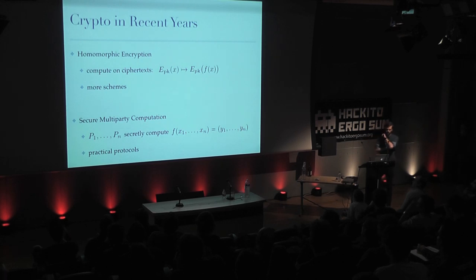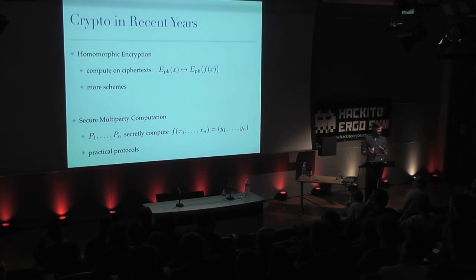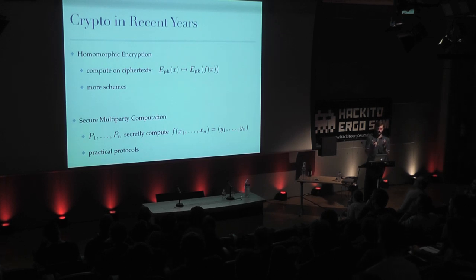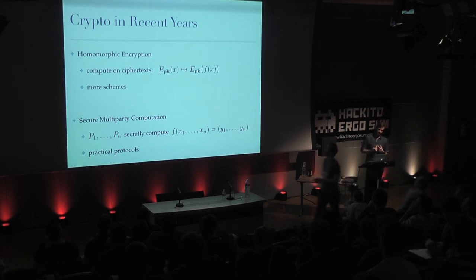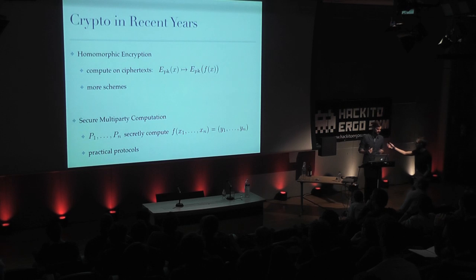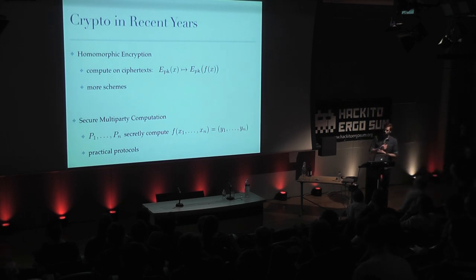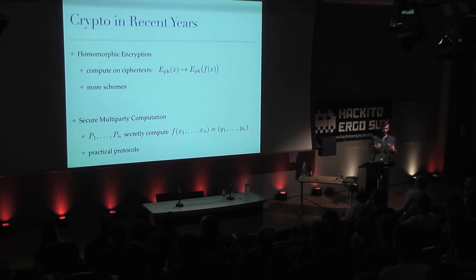Specifically, crypto in recent years has evolved in one field called homomorphic encryption, where we actually do computation directly on ciphertext. So I can encrypt with my public key, send you the ciphertext, you can somehow manipulate the plaintext inside the ciphertext, send me back the encryption, and I can decrypt and see the result. The progress has been in developing schemes that allow a larger class of functions to be computed.